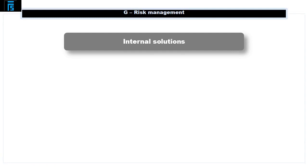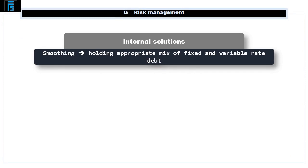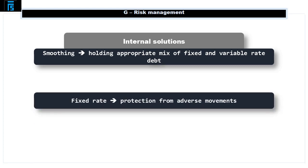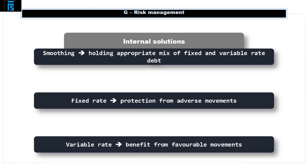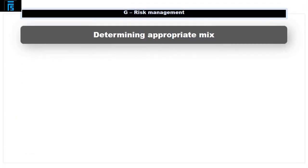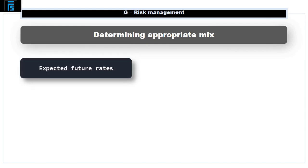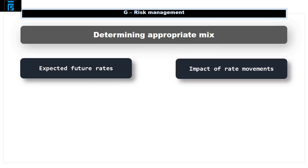Internal solutions. Companies will often adopt an approach known as smoothing in an attempt to manage the interest rate risk on current borrowing. This refers to holding an appropriate mix of fixed and variable rate debt. The fixed rate provides protection from adverse rate movements, whilst a variable rate still allows them to benefit if the rate moves in their favour. It is important to remember that risk simply refers to a variability in the possible outcomes — there is an upside as well as a downside risk. In determining what an appropriate mix is, companies will take into account both expectations as to what future rates will be and the impact that rate movements will have.